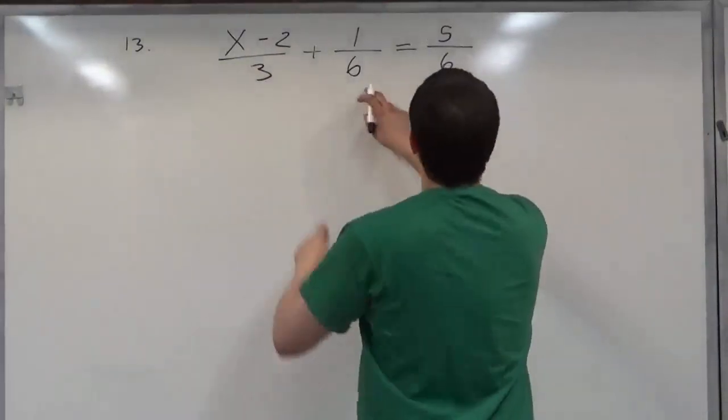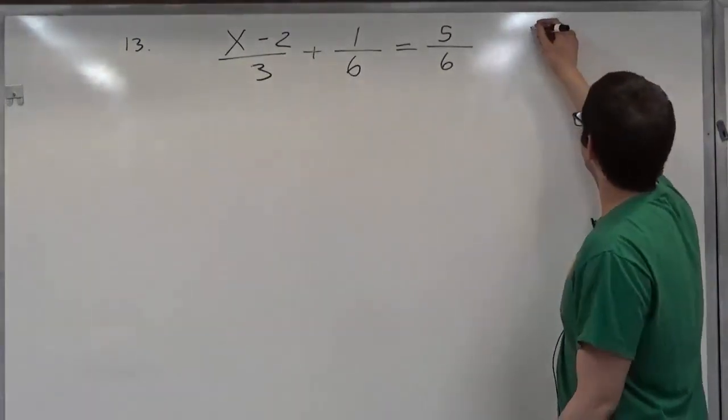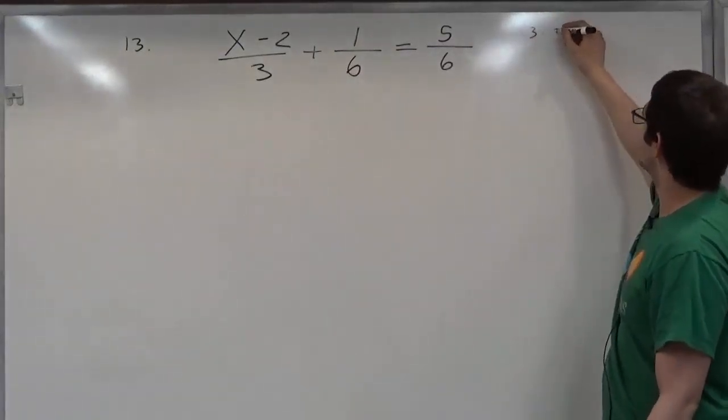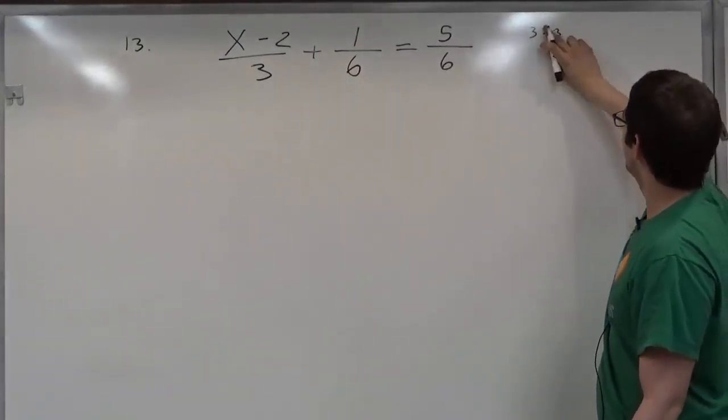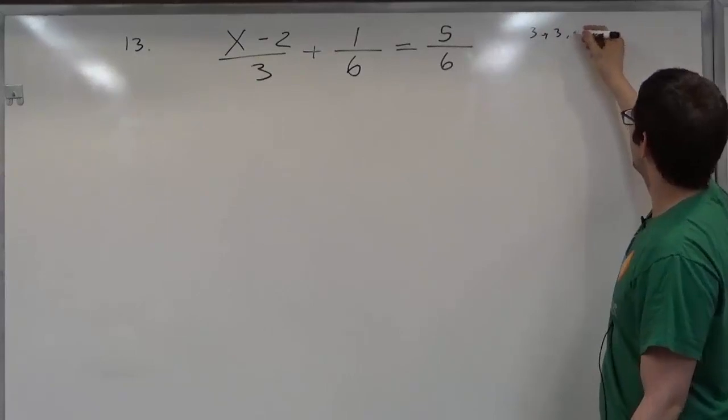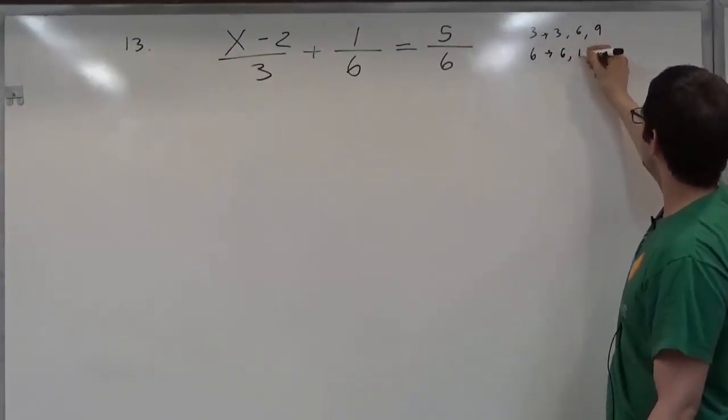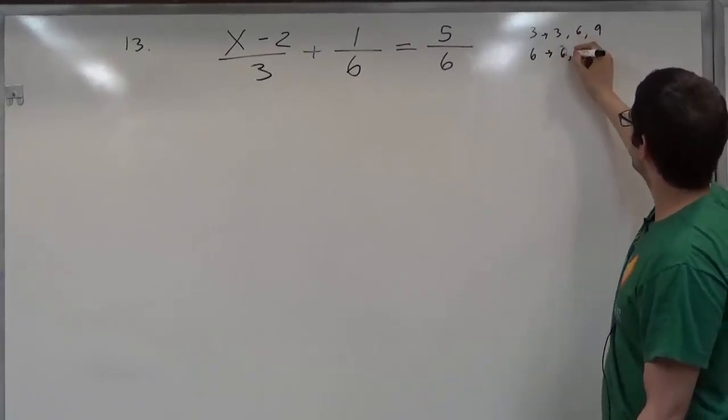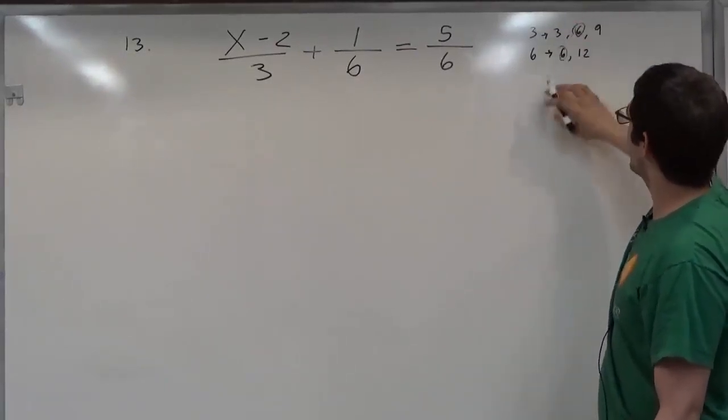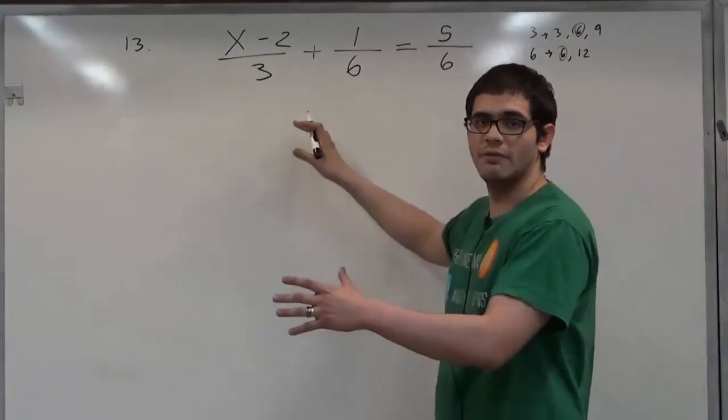If we look at 3, 6, and 6, the least common multiple can be found by looking at multiples: 3, 6, 9 for the first, and 6, 12 going forward for the second. You can see that 6 is common between the two. So we're going to multiply everything out by 6.